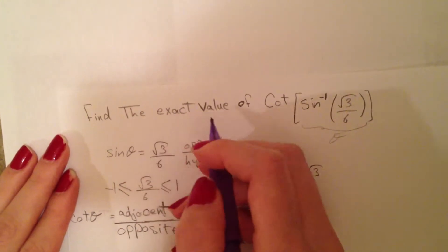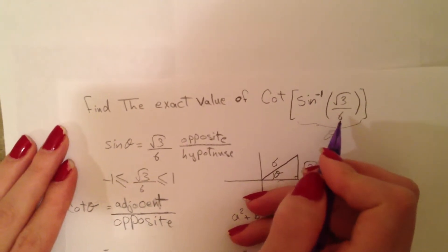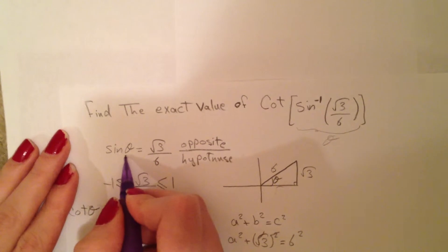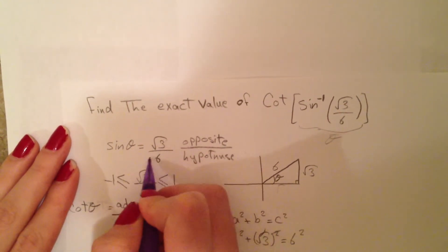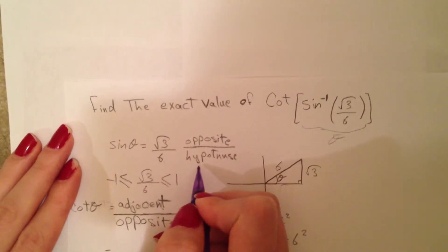The question is to find the exact value of cot(sin^(-1)(√3/6)). This is our data. Sin(θ) = √3/6, where sine is opposite over hypotenuse.